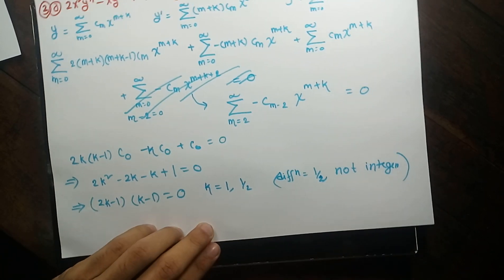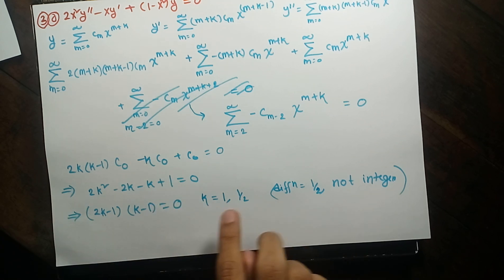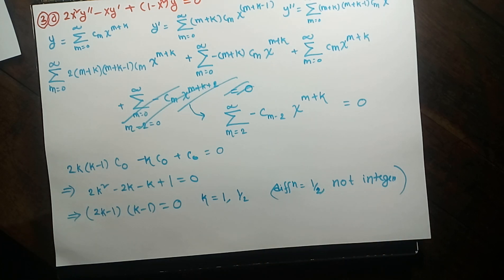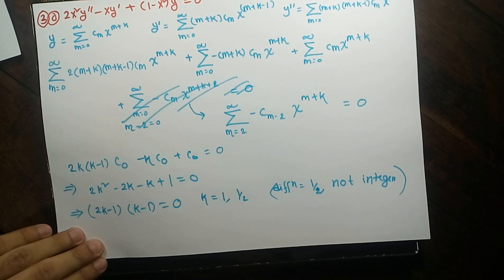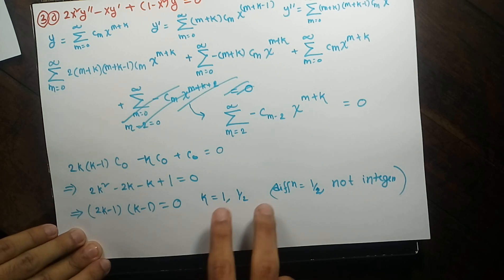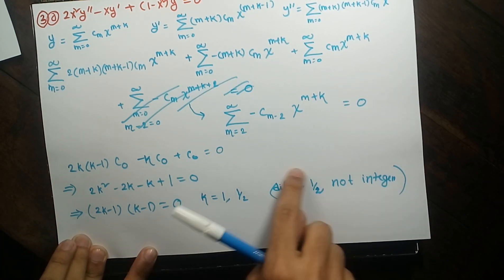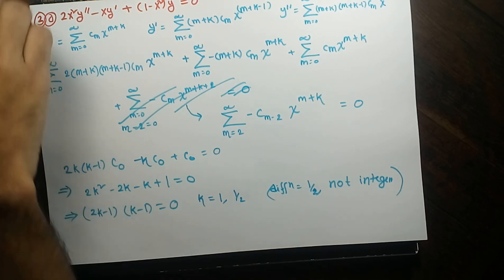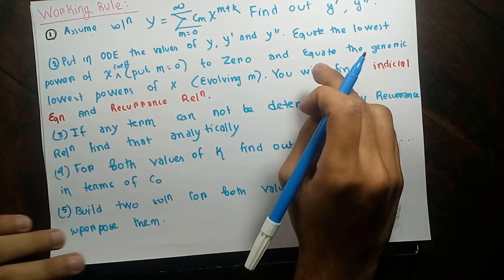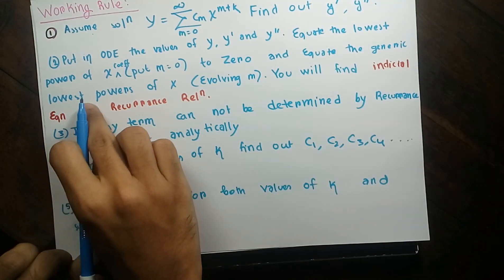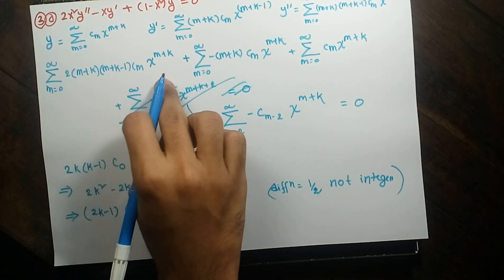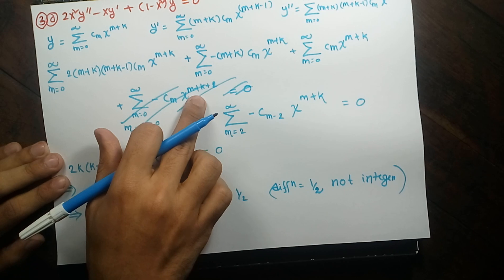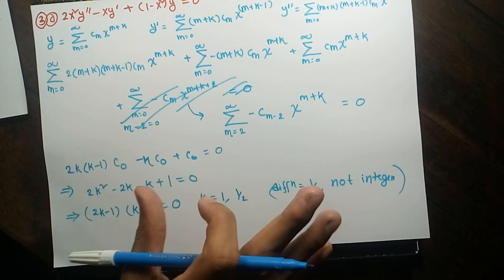In this example the method I will proceed with is only applicable to cases where the roots differ by a fraction and not by an integer. I will show in later examples how to work when the difference is an integer or zero. For this video, the process applies only when the difference in indicial roots is not an integer. The generic lowest power is m+k, and we have converted the last term to the same power by indexing.